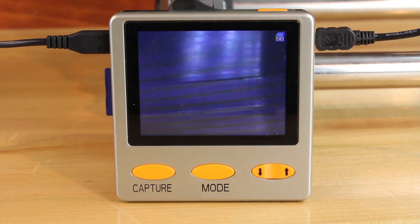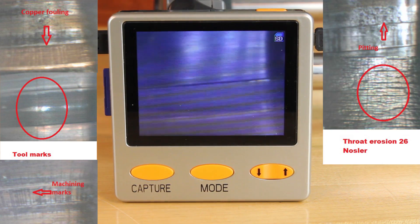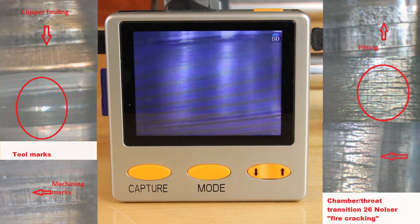The Bore Cam will show lead copper fouling, rough or machining marks, pitting, rusting, fire cracking, and general wear in the barrel and throat chamber area.